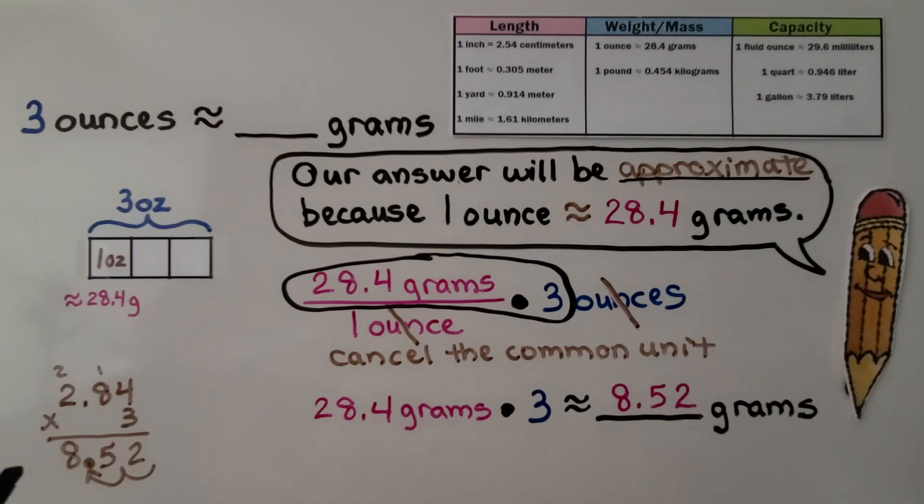We do the math on the side and we get 85.2 grams. That means 3 ounces is approximately 85.2 grams.